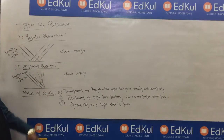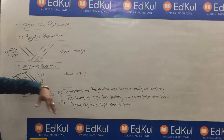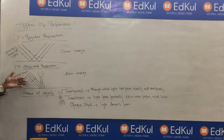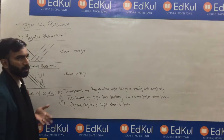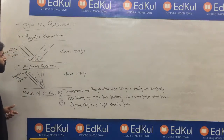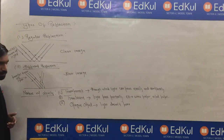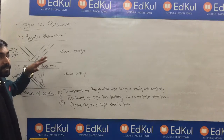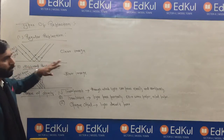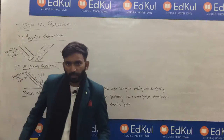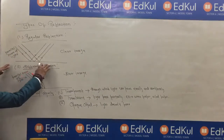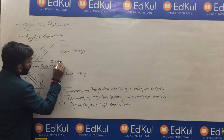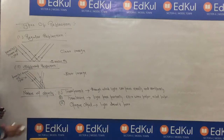In this video we will discuss the types of reflection. Basically, reflection is of two types: regular reflection and diffused reflection. What is the difference between these two kinds of reflections? Regular reflection happens when the surface on which the light ray strikes is polished and smooth. If it is polished and smooth, then it will be regular reflection.